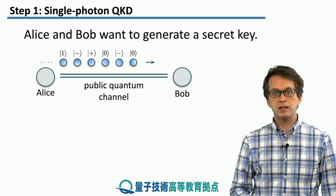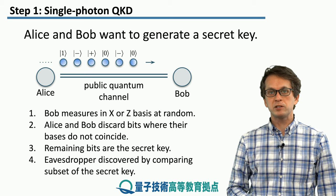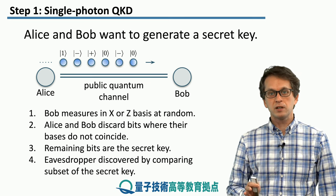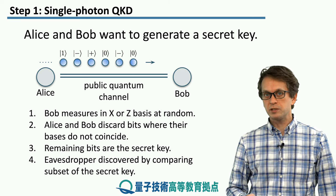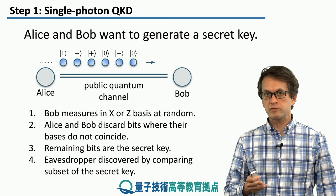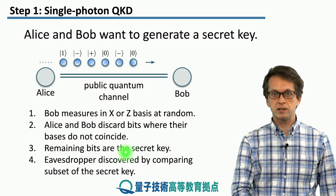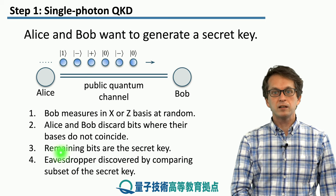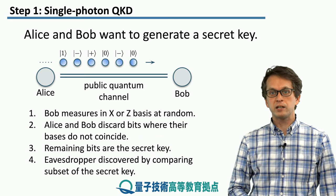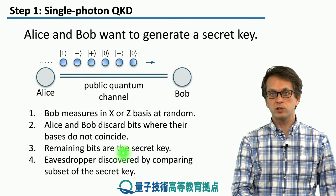And then she transmits these states to Bob. Then what Bob does is he randomly measures them either in the X or Z basis. After the measurement is finished, Alice and Bob exchange information about the preparation basis and the measurement basis. And if these coincide, they keep results for those measurements, and that forms the basis for their secret key. And if they dedicate a portion of the secret key to eavesdropper detection, they can do that due to non-orthogonality of the original encoded qubit states.